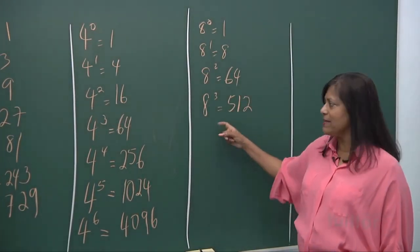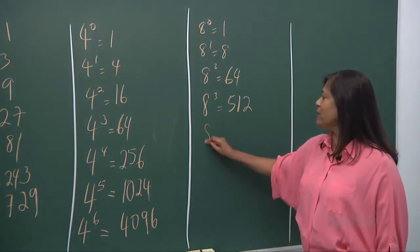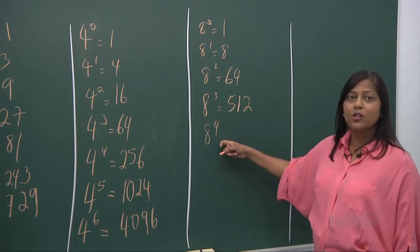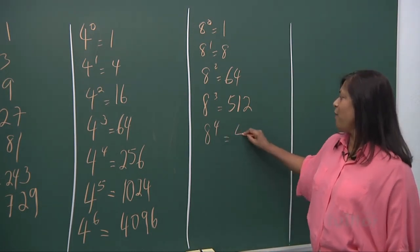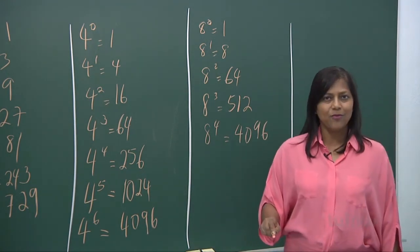Isn't it amazing? Don't you see these numbers appearing in the indices of 2? And if you look at 8 to the power of 4, 8 to the power of 4 is 4096.